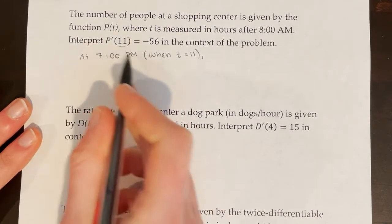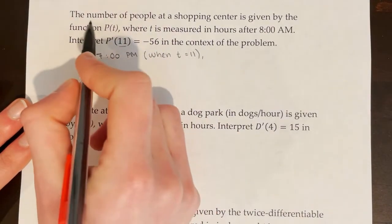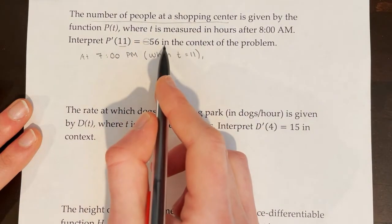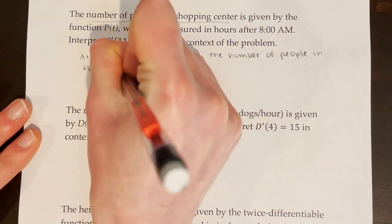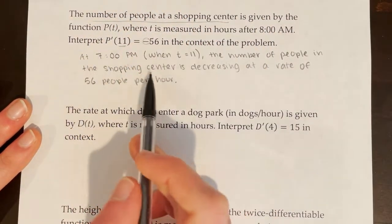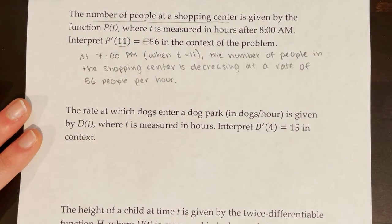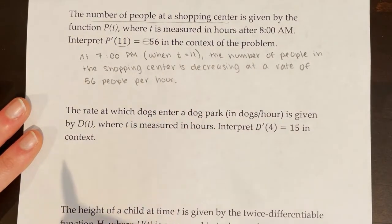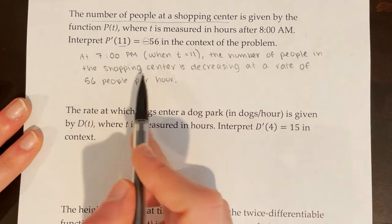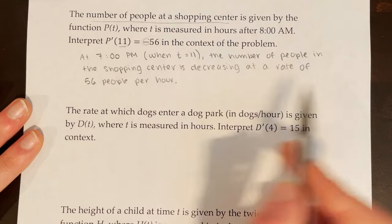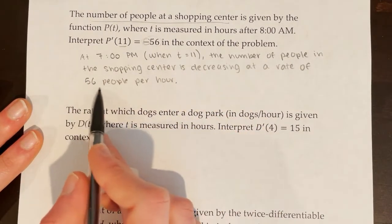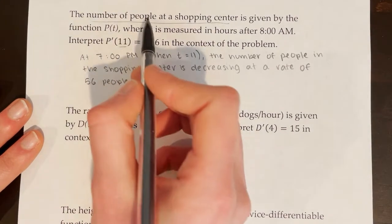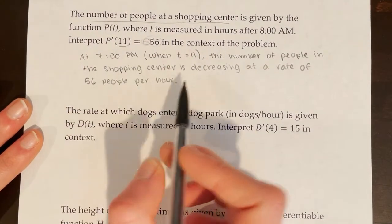What is happening at 7 o'clock p.m., when t is equal to 11? The number of people in the shopping center, which is the dependent variable, is decreasing — because this number is negative — by 56 people per hour. So the completed statement is: at 7 o'clock p.m., when t is equal to 11, the number of people in the shopping center is decreasing at a rate of 56 people per hour. Keep in mind: even though the value is technically negative 56, because I already said the rate is decreasing, I would not say 'decreasing at a rate of negative 56.' The unit is people per hour — units of the dependent variable, people, divided by units of the independent variable, hours.